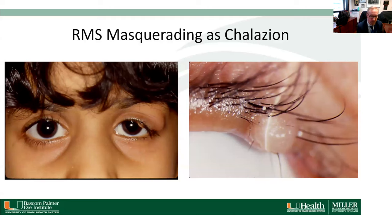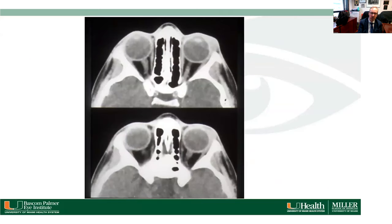Rhabdomyosarcoma can masquerade as a chalazion. This patient presented with swelling of her left upper eyelid and was referred for a chalazion. On careful examination she had a lid lesion but also a mass extending into the orbit. Imaging confirmed she had a mass extending into the orbit, which ended up being an alveolar rhabdomyosarcoma — the second most common subtype.